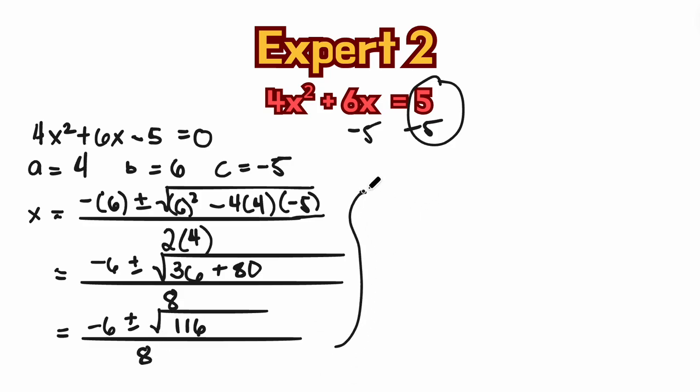So now we want to show the two possible answers. So we have x for the root 1 would be negative 6 plus or minus square root of 116 all over, sorry, that's not plus or minus, plus square root of 116 all over 8.